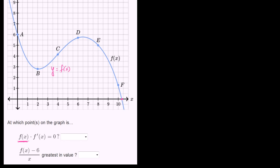So we're going to focus on where f prime of x is equal to 0. We have to remind ourselves what f prime of x represents — f prime of x represents the slope of the tangent line at that value of x. For example, f prime of 0, which is the x value for this point right over here, is going to be some negative value.